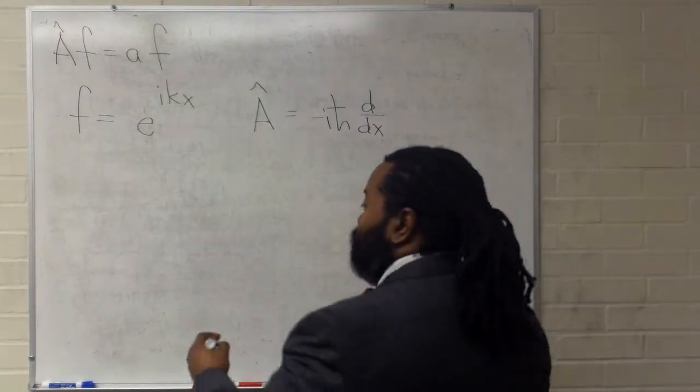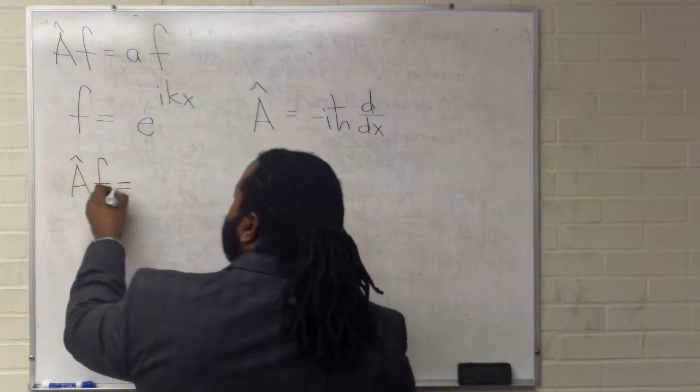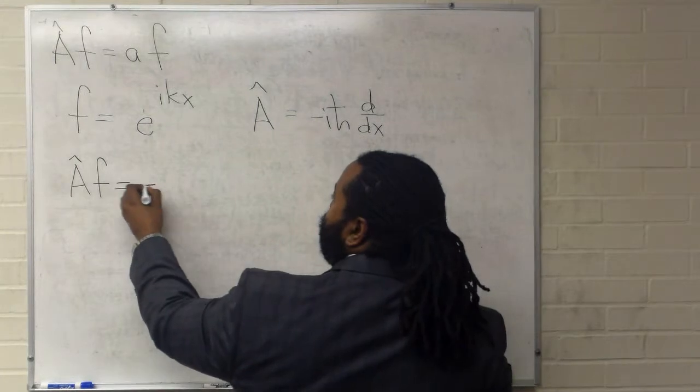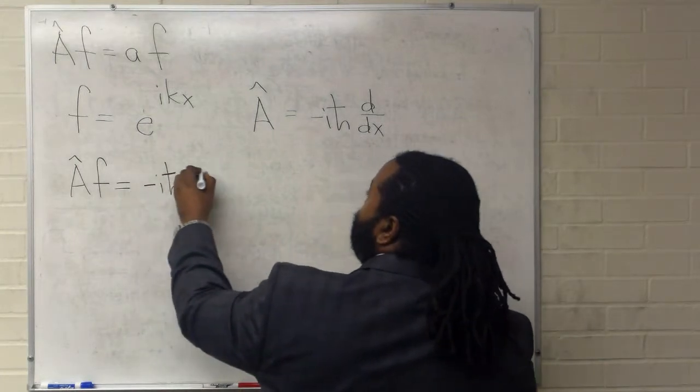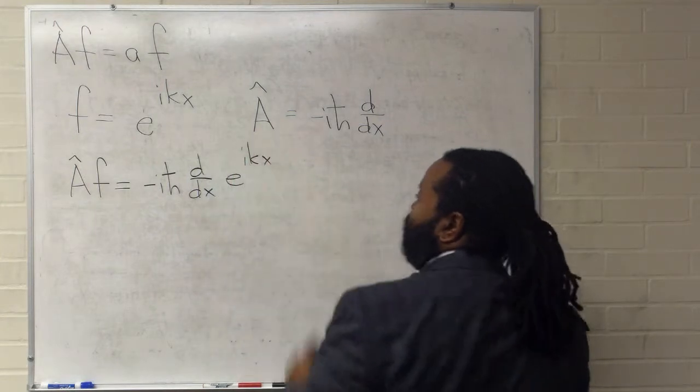In order to do this, we must set up the first half on our left-hand side. So substituting in, we've got minus i h-bar derivative of e to the ikx.